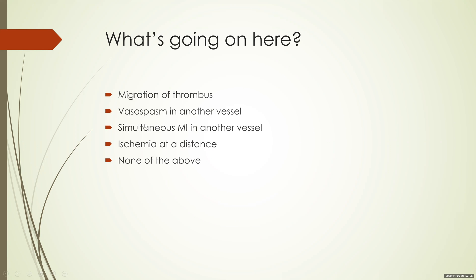It's unlikely to be due to migration of thrombus. Remember, we localized the pre-lysis ECG to the proximal RCA. High lateral wall MIs are generally due to occlusions of the ramus, obtuse marginal, or diagonals — a completely different vessel. Thrombus cannot migrate into a different vessel, so migration is unlikely.